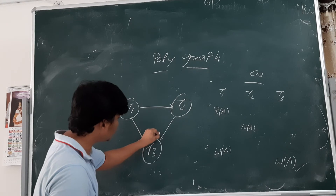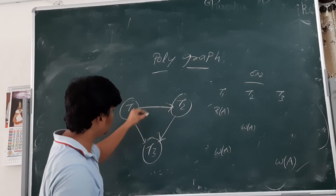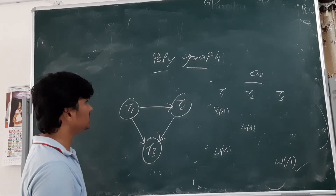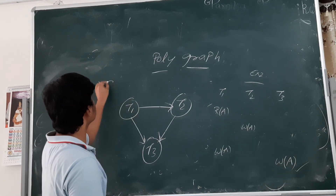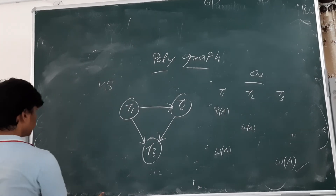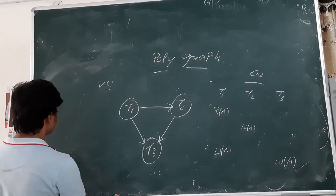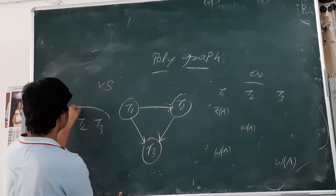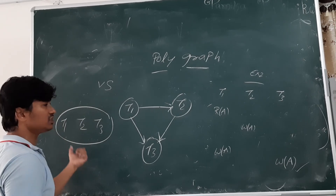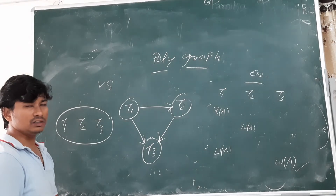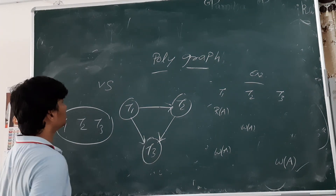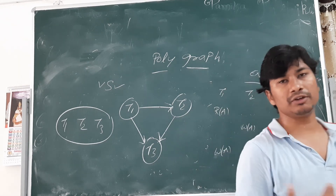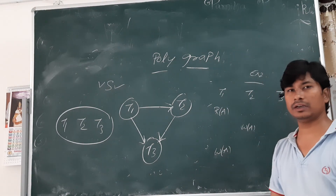Now we check whether any cycles exist in this polygraph. There are no cycles. So we can say that this schedule is view serializable. The equivalent serial order is T1, then T2, then T3. This serial schedule T1→T2→T3 is view equivalent to the given non-serial schedule. I hope you have understood these two examples; I will give a few more examples for better understanding.